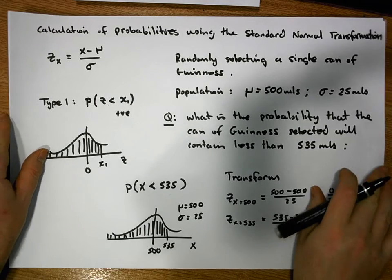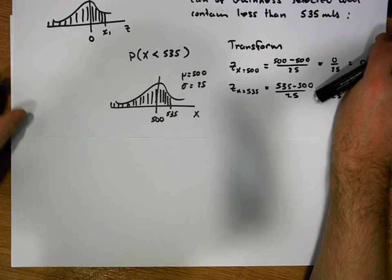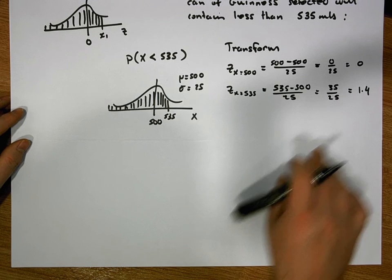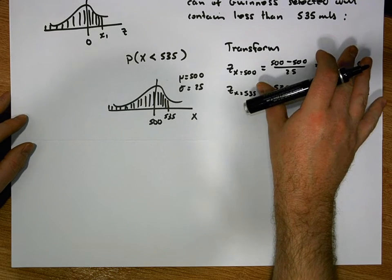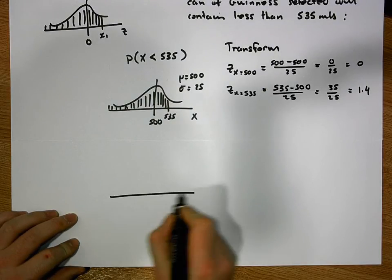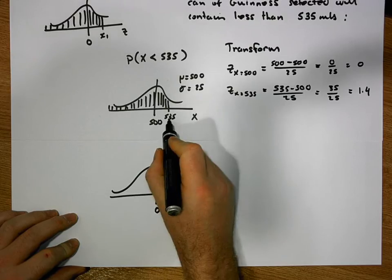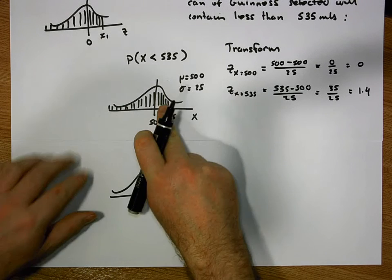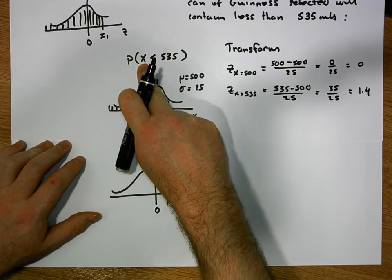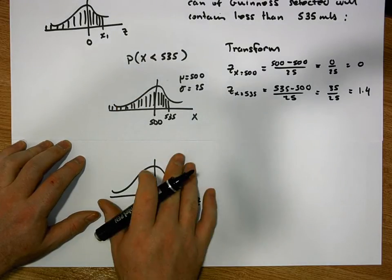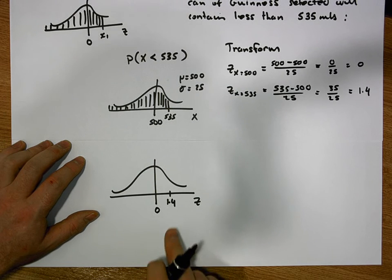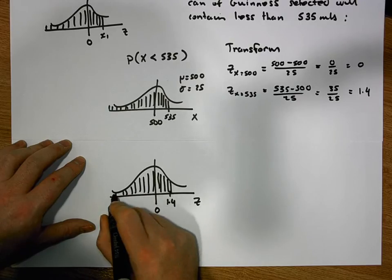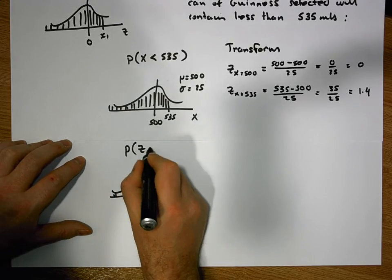So what we know now is that our transformed variables have been taken to 0 and 1.4. Let's draw the curve associated with this transformed variable. The curve now shows that 500 went to 0 and 525 went to 1.4, and this horizontal axis represents the z-axis. We were interested in the probability of selecting a can with less than 525 mils — in this transformed scenario, the question becomes: what's the probability of observing a z-score less than 1.4? We need to calculate the area to the left-hand side of 1.4.